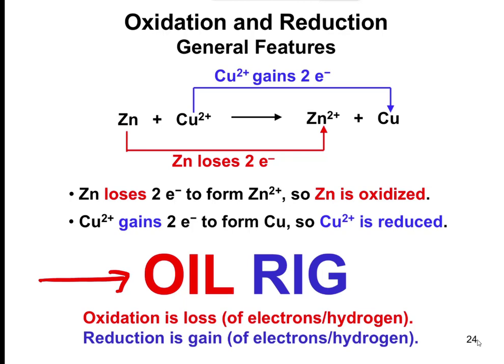Copper gains two electrons, so since copper is gaining two electrons, that's being reduced — the copper ion is reduced. The metal zinc loses the electrons, so it's going to be oxidized. Whenever we refer to things as either oxidized or reduced, we're always talking about the reactants. You always define the reactants as either oxidized or reduced.